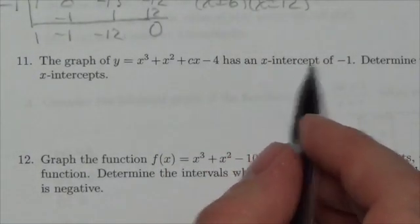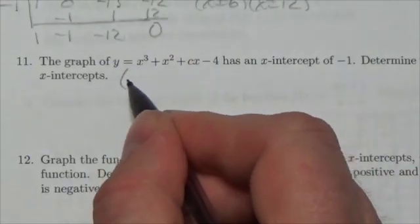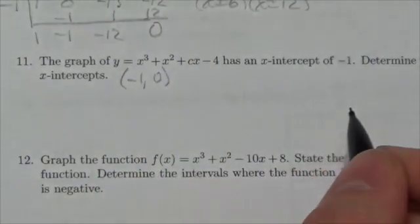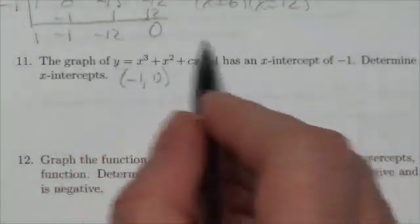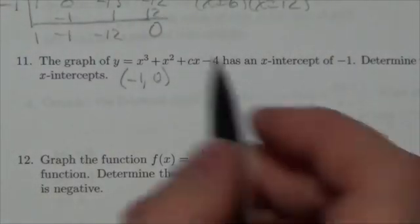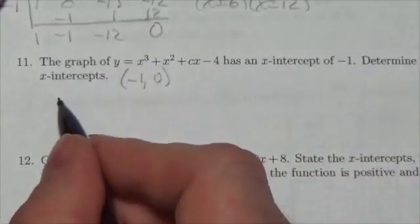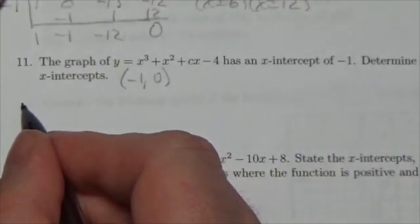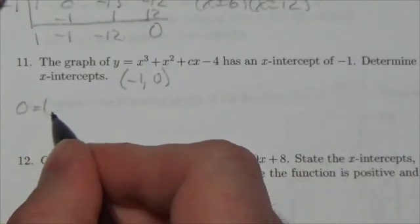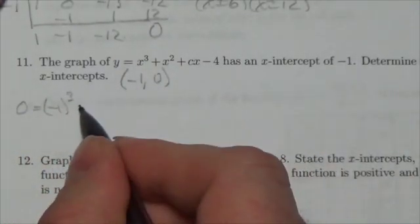Well, if it has an x-intercept of negative 1, we know that the point negative 1, 0 must be on that graph there, the graph of that function, that cubic. So I should be able to plug that in. So I know that the y-coordinate goes to 0 when x is negative 1.